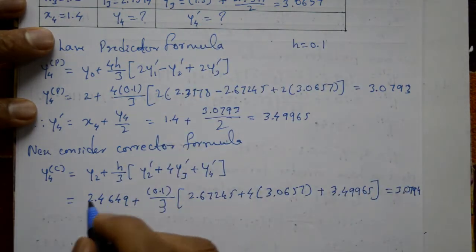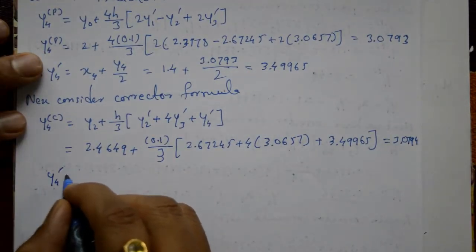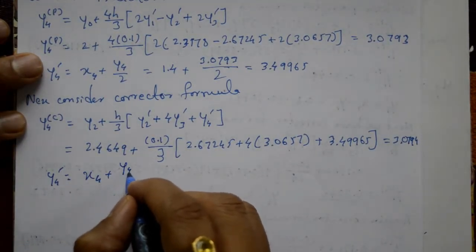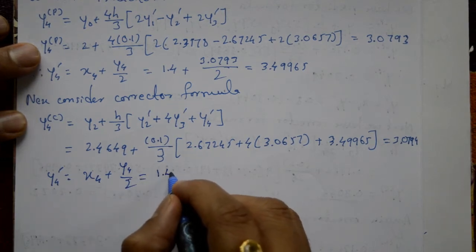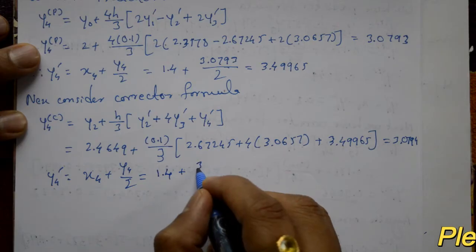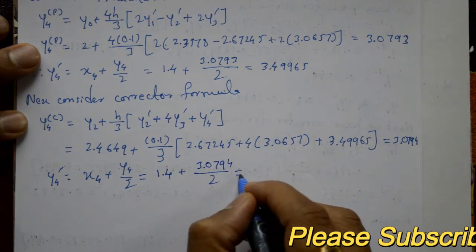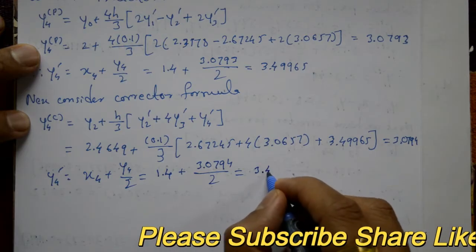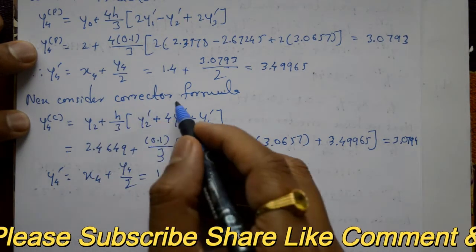Next, find the corrected y4': y4' = x4² + y4/2 = 1.4² + 3.0794/2 = 3.4997. The corrector formula is now repeated with this updated y4' value.